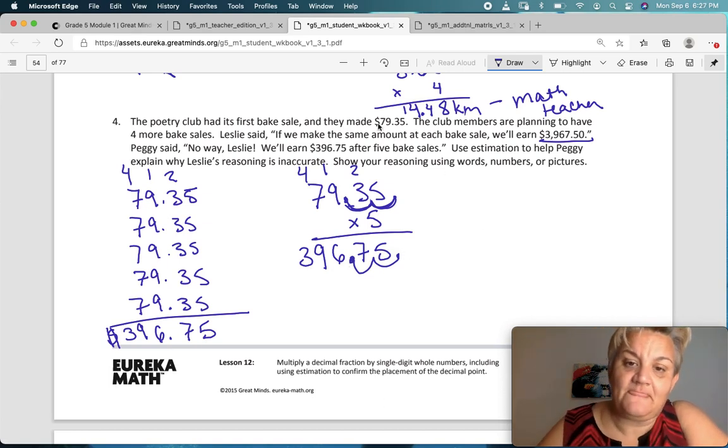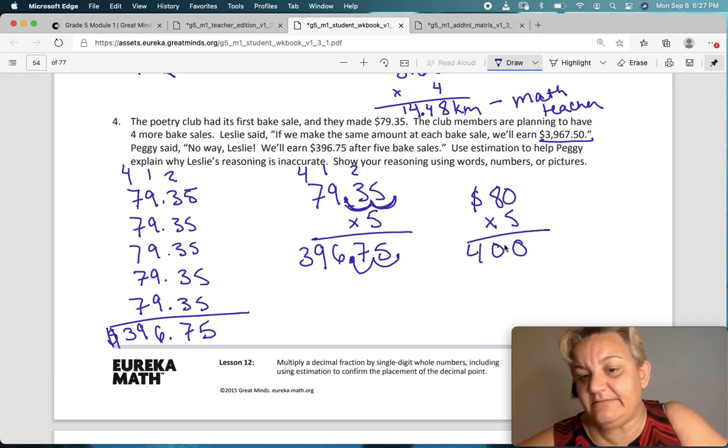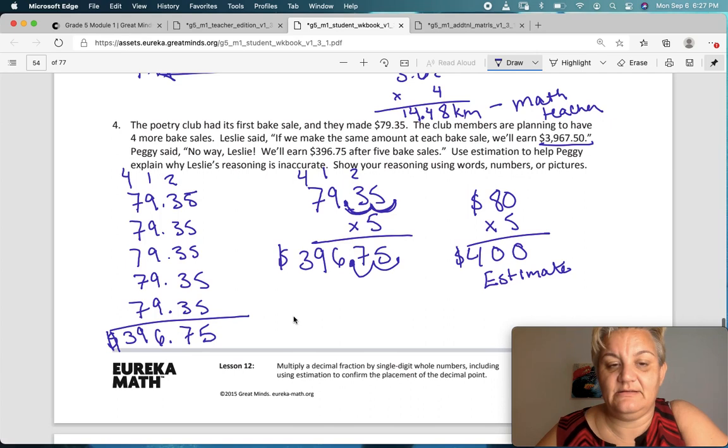Now, let's use some estimation. 79.35. Well, can we just estimate? I'm not going to say round because rounding would keep it at $79. But can we estimate this as being $80? And can we multiply that by 5 pretty easily? Which would be $400, right? So, if we estimate that this is a $400 adventure, we know that she's wrong, $3,967. She has got some pipe dreams, right? But, $400 isn't bad or $396.75. Not too bad.